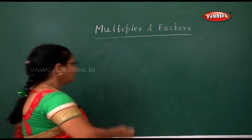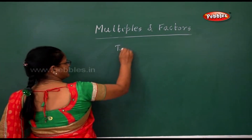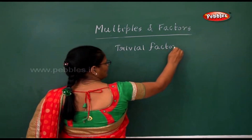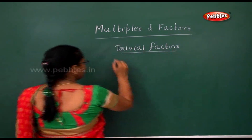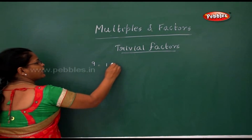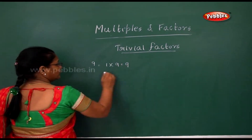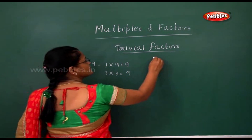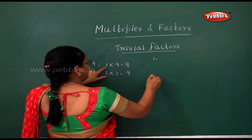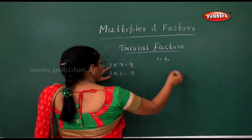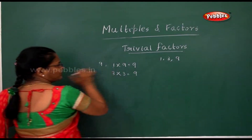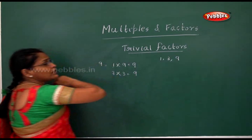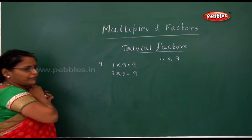There is one more thing — trivial factors. For the number nine: one nine is nine, three threes are nine, so the factors are one, three, and nine. The number one itself is always a factor, and the number itself is also a factor. These — one and the number itself — are called trivial factors.